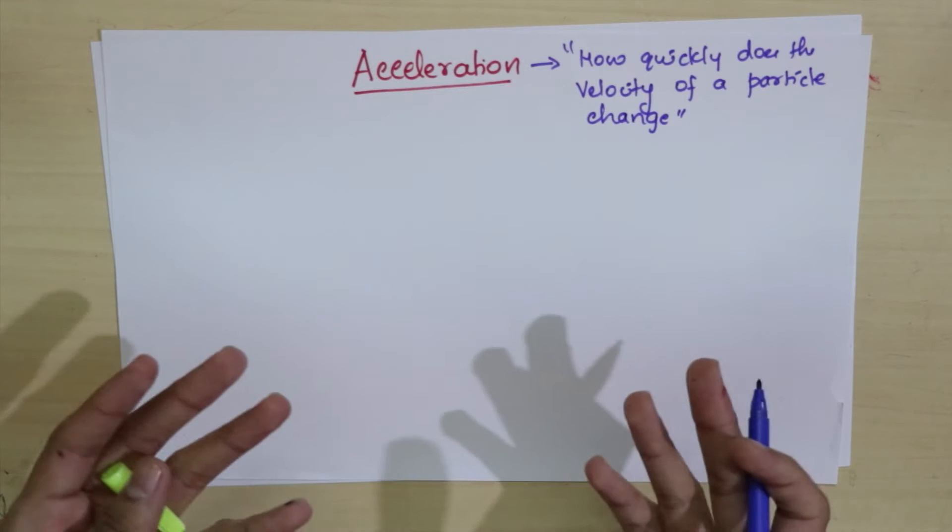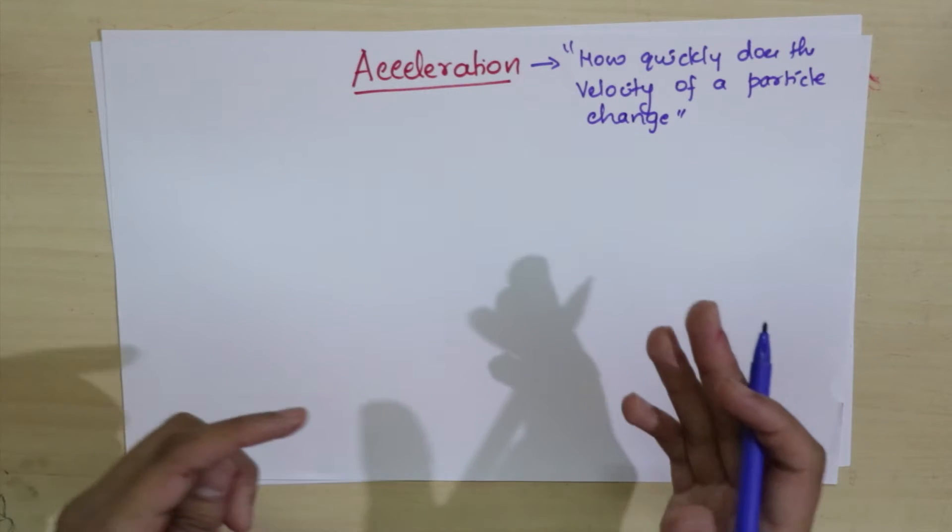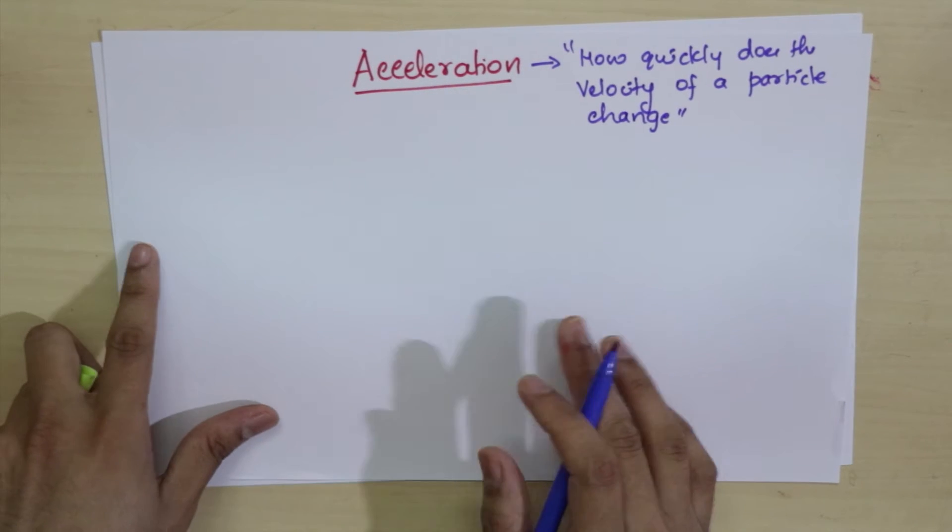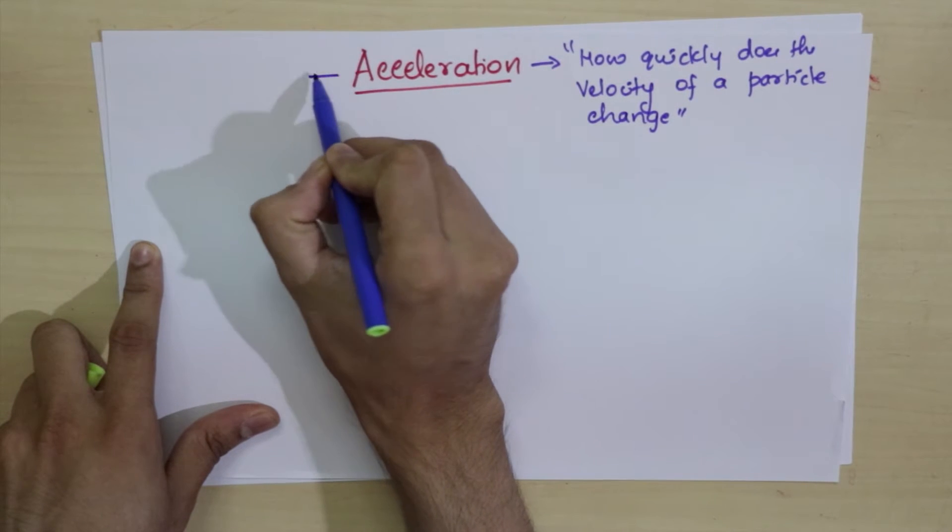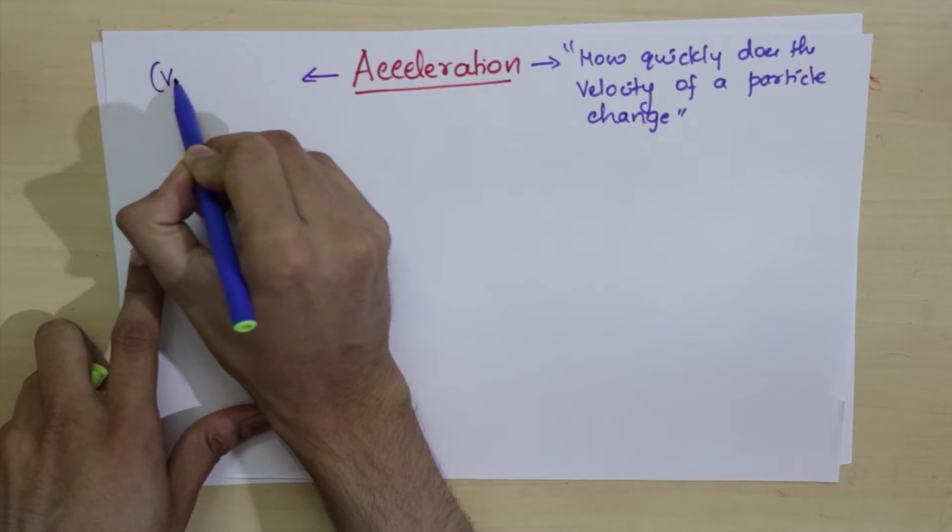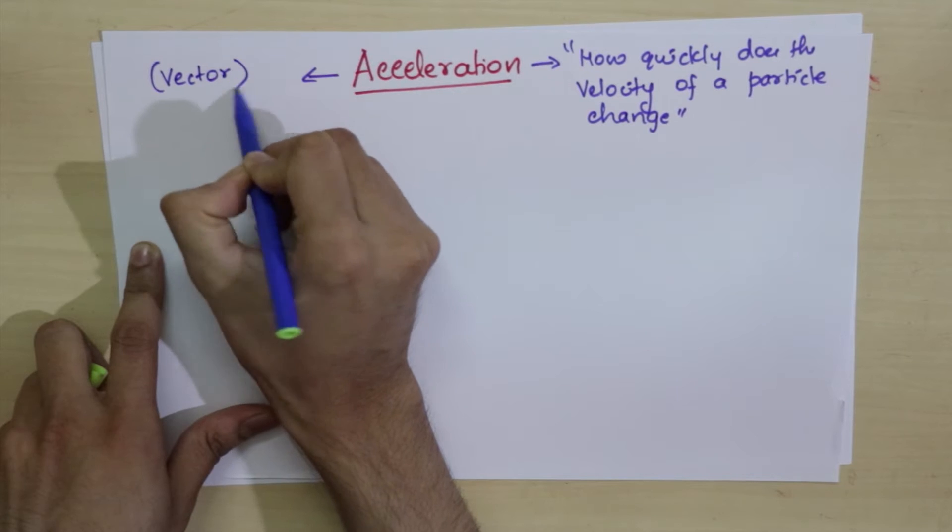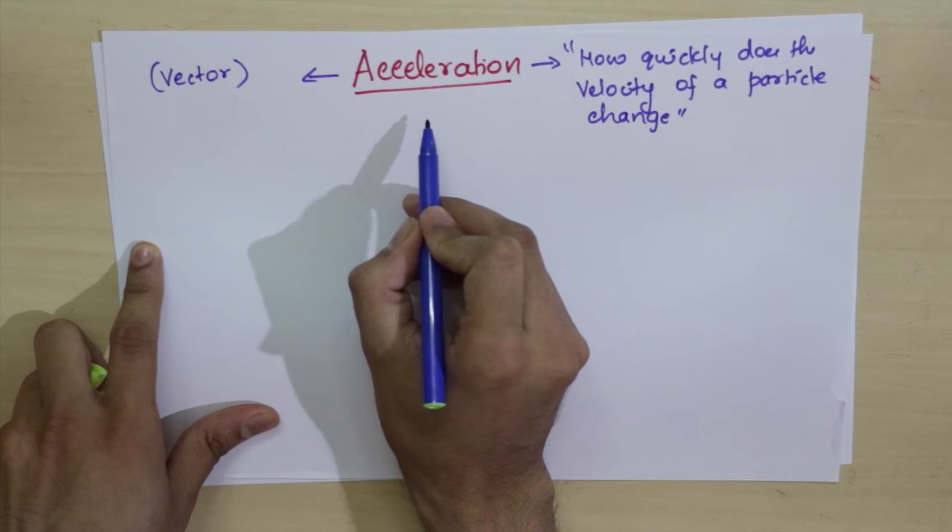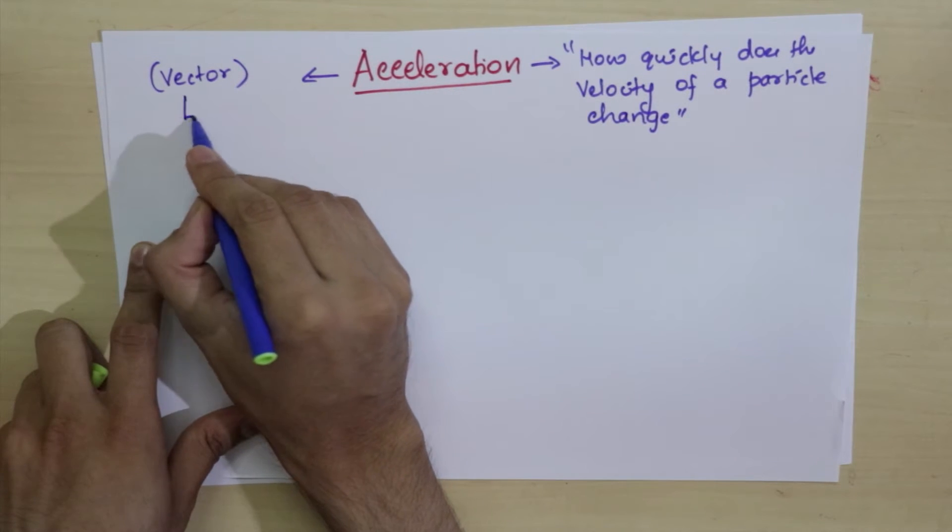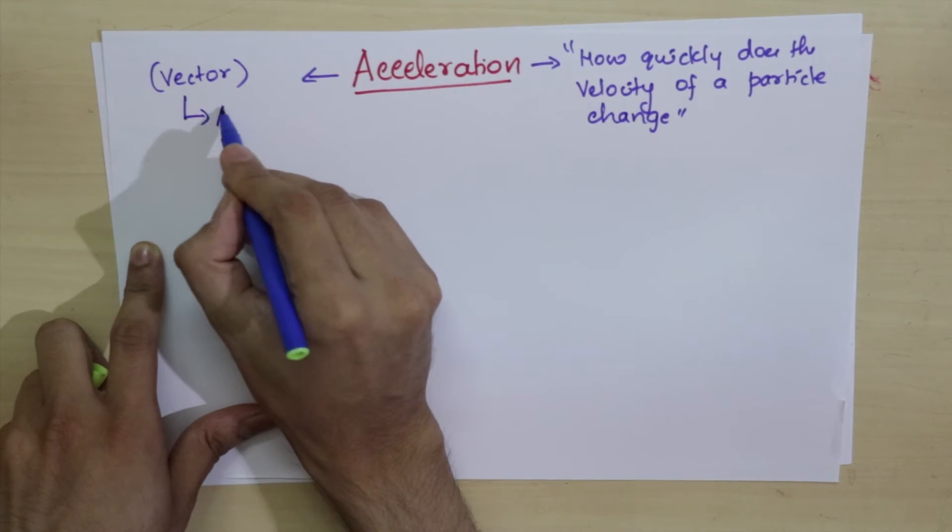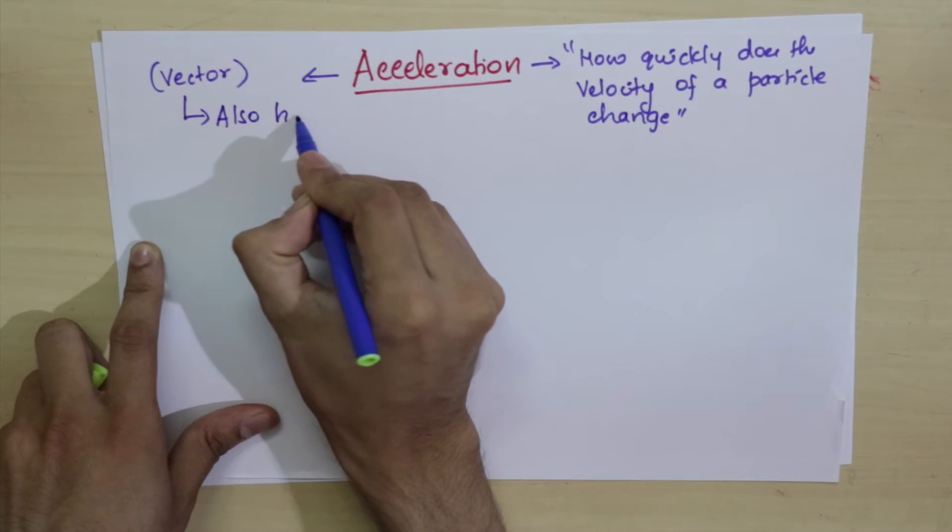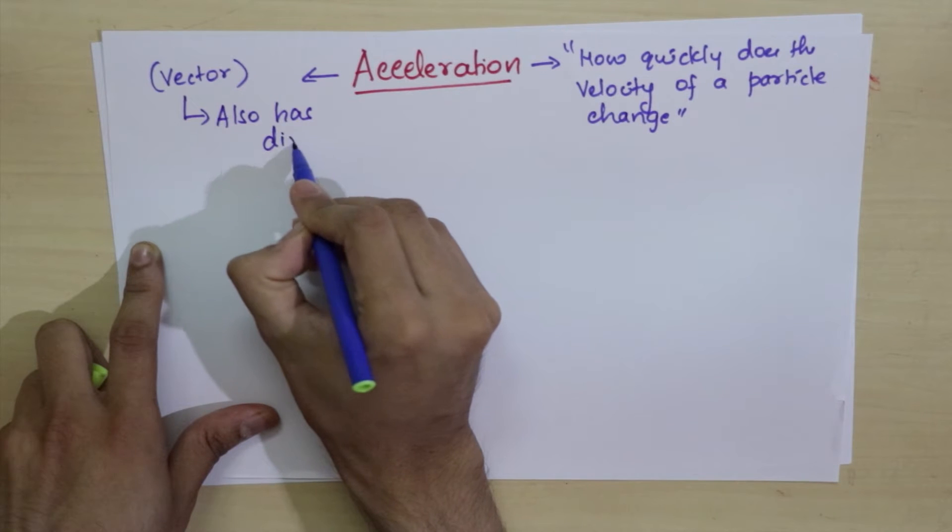Now you might say this doesn't look very tricky. Well, the reason it becomes tricky is because acceleration is a vector quantity. What that means is acceleration not only has a number associated with it, but it also has a direction.